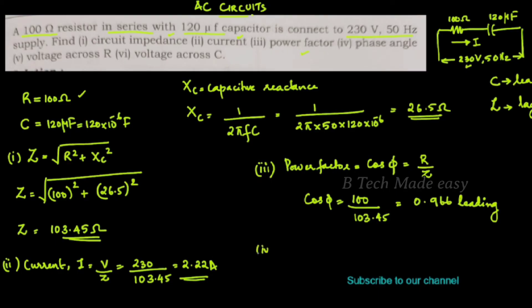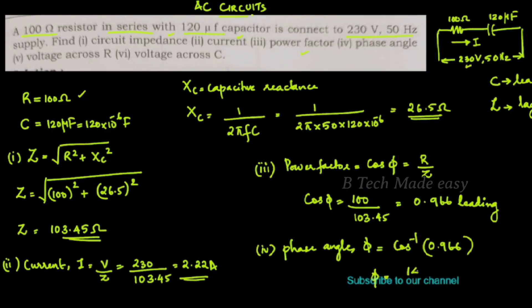The power factor is 0.966 leading. We have to find the phase angle, which is represented by φ. cosφ = 0.966, so the phase angle φ = cos⁻¹(0.966) ≈ 15°.